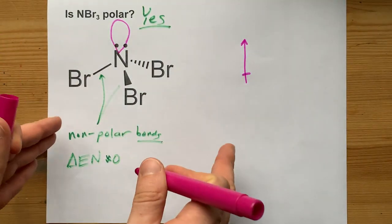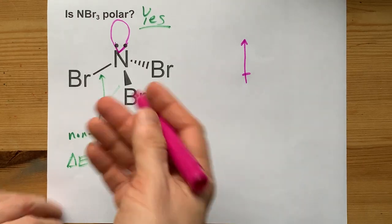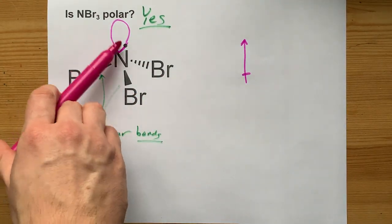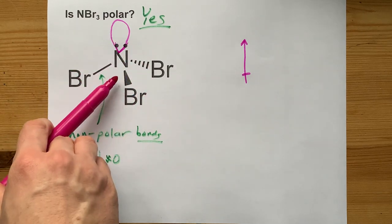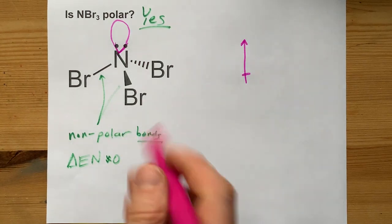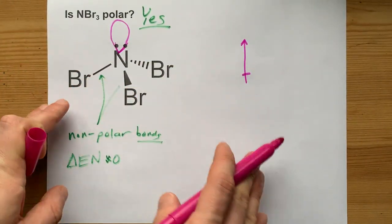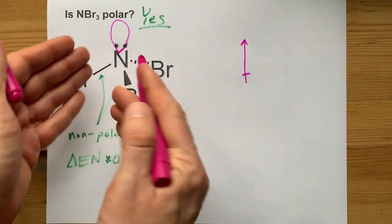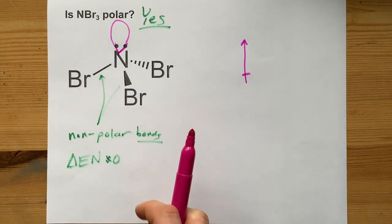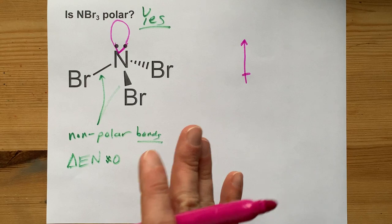The point I'm trying to get at here is generally if you have a lone pair on the central atom, it will probably be polar unless you have a second lone pair on the exact opposite side as the first one. There has to be a perfectly symmetric distribution of electron density, and a single lone pair on the central atom throws all that into disarray and makes it a polar molecule no matter how non-polar the other covalent bonds are.